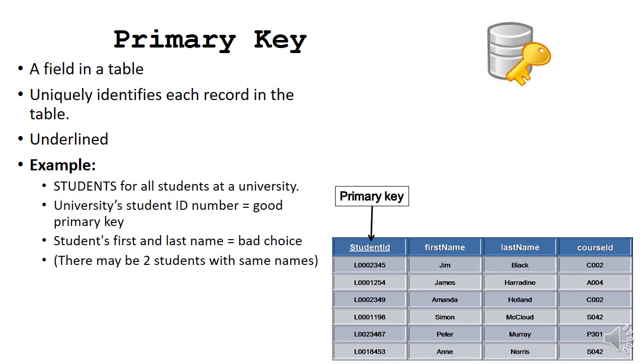Now, if this is a table of all the students at a university, the student ID number would be a good primary key, because it would be unique and uniquely identify each student. Whereas if you use the student's first name or last name or both together, you could get two students with the same name. So you might not get a unique record by using those as the primary key. Student ID is far better.